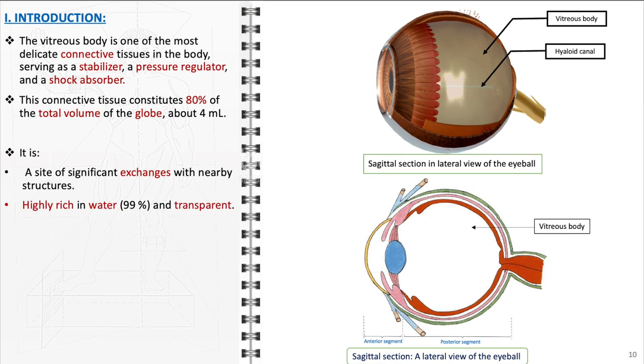The vitreous body's composition is predominantly water, 99%, which is pivotal for its transparency. This transparency is crucial for the unobstructed passage of light to the retina, enabling clear vision.